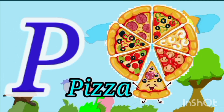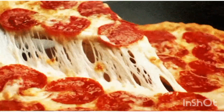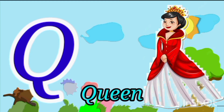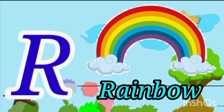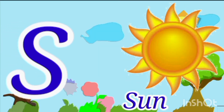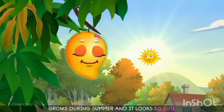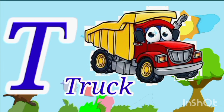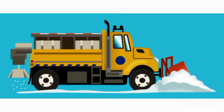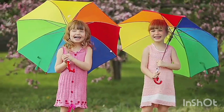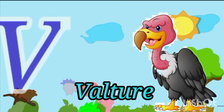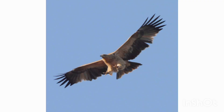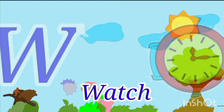P for pizza. Q for queen. R for rainbow. S for sun. T for truck. U for umbrella. V for vulture. W for watch.